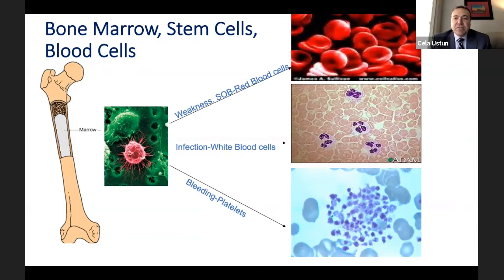The second type of blood cells are called white blood cells. They fight infections. If we have low white blood cells, we are prone to develop all kinds of infections, and that can be life-threatening. The third type are very tiny cells called platelets. They make the clot and stop bleeding when we have bleeding. These cells are critical for survival, and stem cells make them every single day.